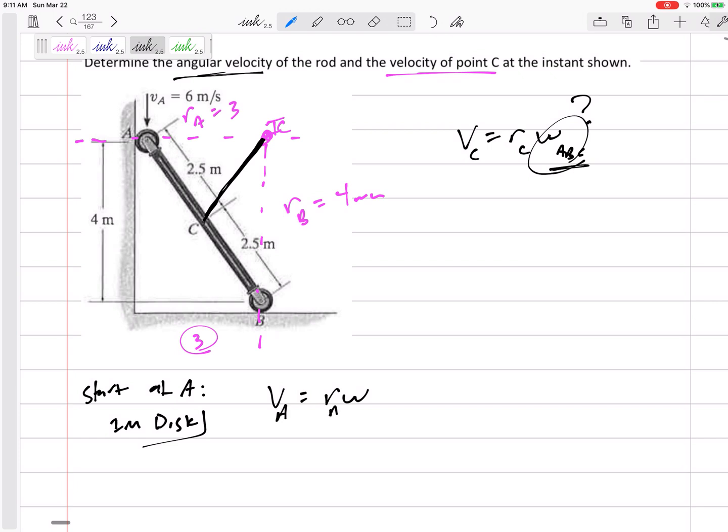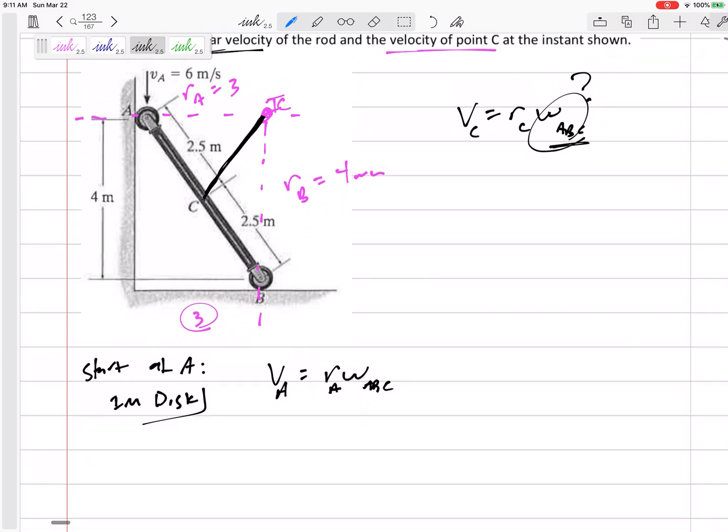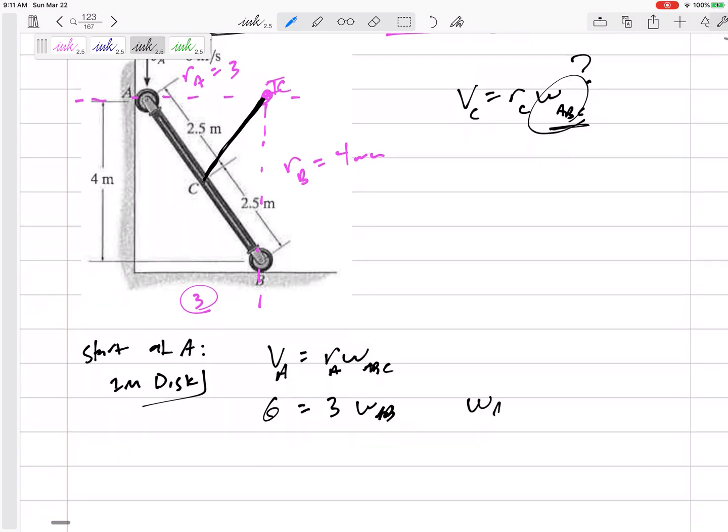So va equals ra omega of that bar, that rigid body. Alright, so if this is 6, and ra is 3, omega would be 2 radians per second.